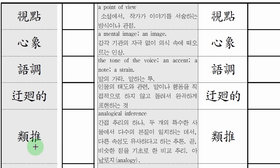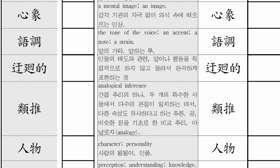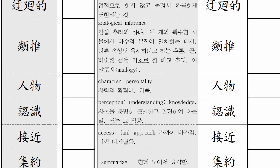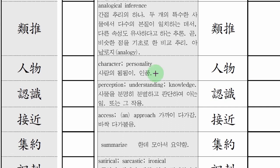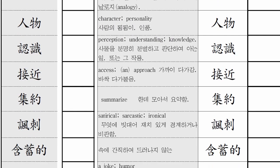한번 읽어볼까요? 유추. 우회적. 어조. 심상. 시점. 그 다음에 인물. 인물은 다 아시겠죠? 인물 뜻이 뭘까요? 사람의 됨됨이가 인물. 큰 인물, 위대한 인물. 이렇게 쓰는 거죠. 그래서 이제 캐릭터라고 하죠. 캐릭터 또는 personality라고 하죠.